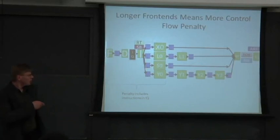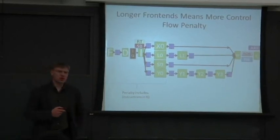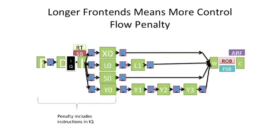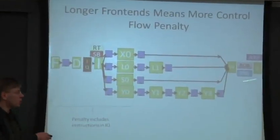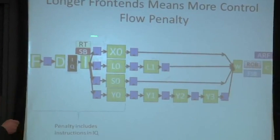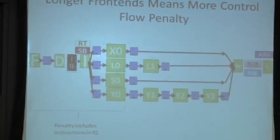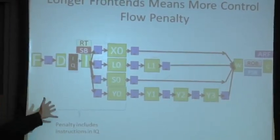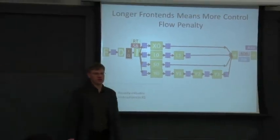If you wait all the way to the end of the pipe in out-of-order processors to resolve your branch, that makes your mispredict penalty even longer. Most people don't actually do that. You can wait until end of pipe to fully clean out things, but you want to redirect the fetch or the PC at the front of the pipe as quickly as possible, because you don't want to be fetching off into the weeds and wasting cycles.